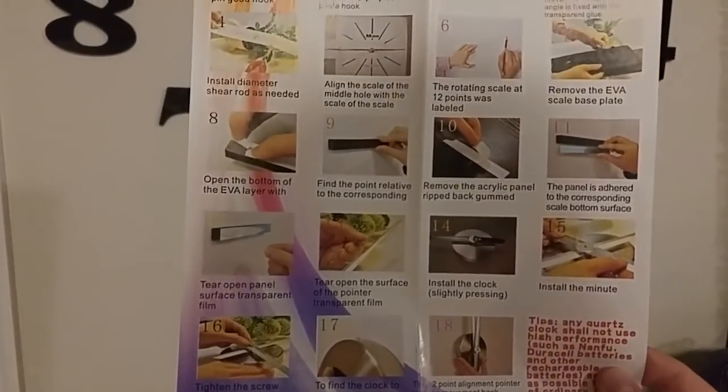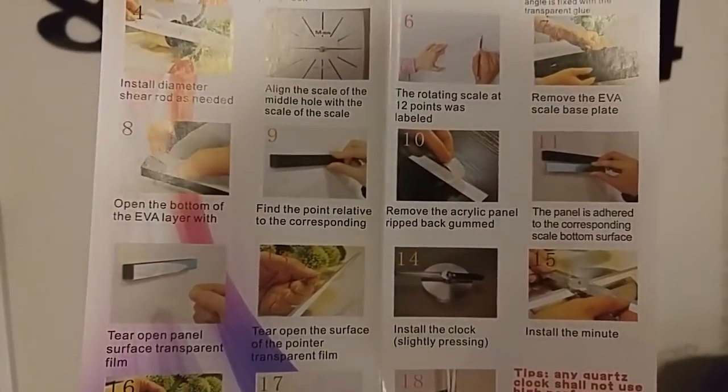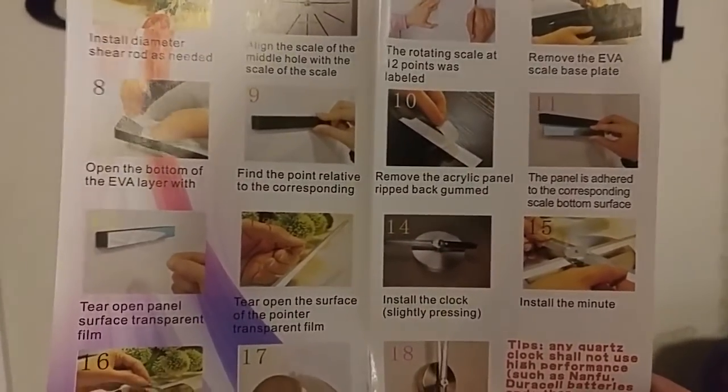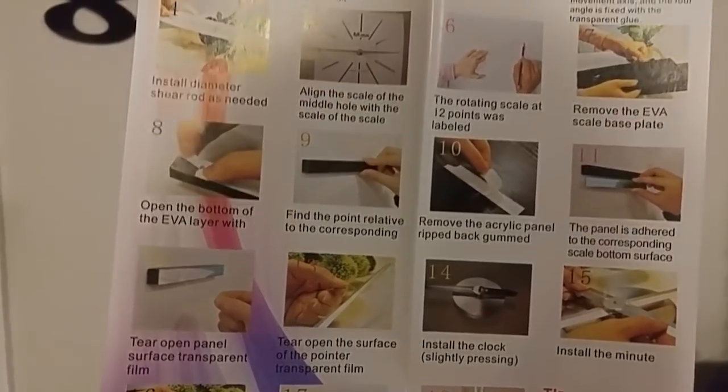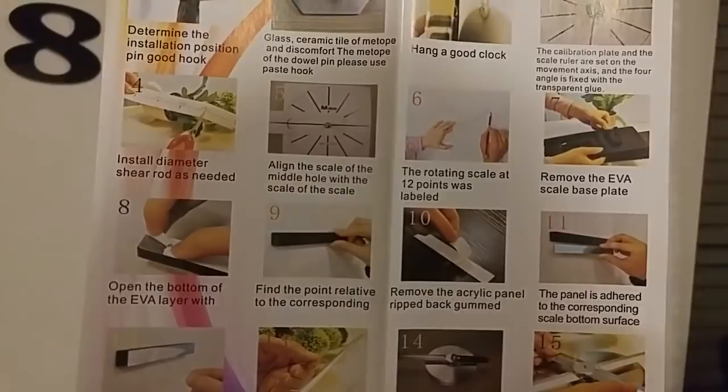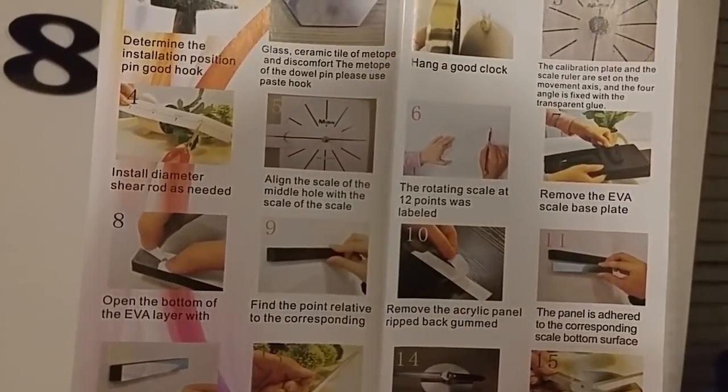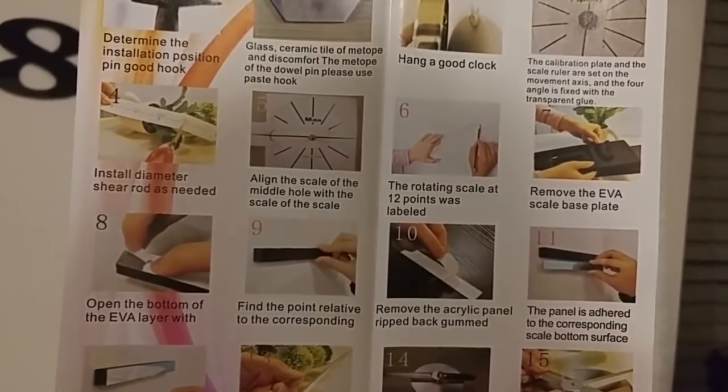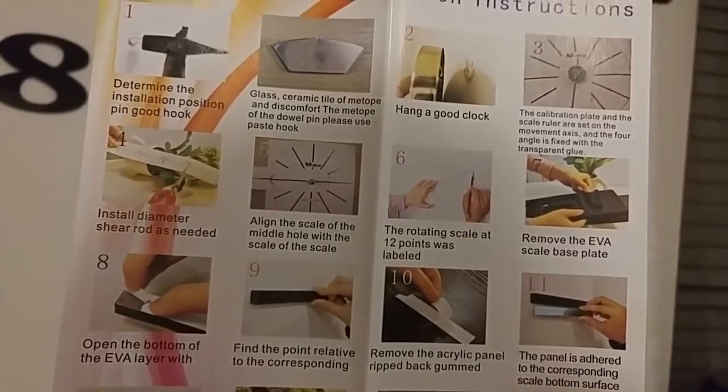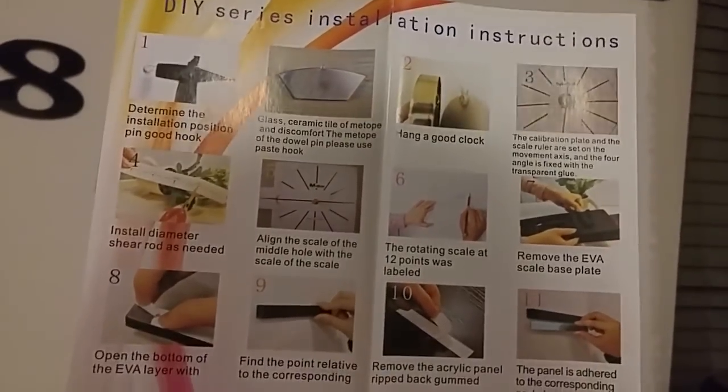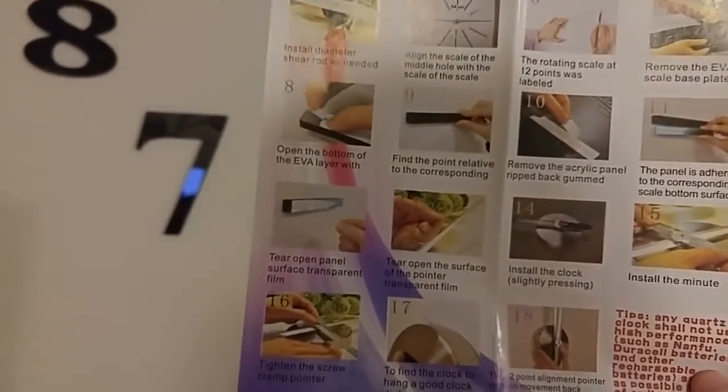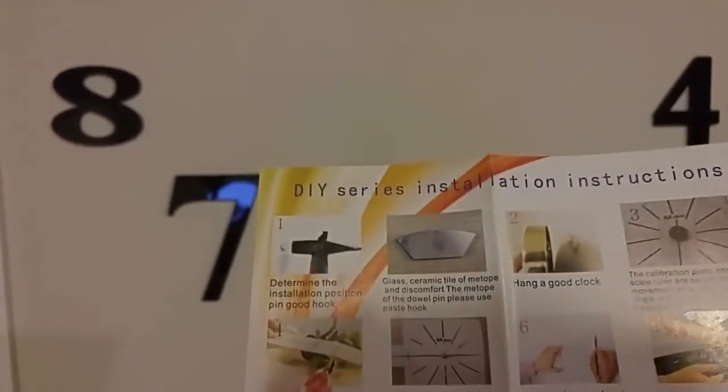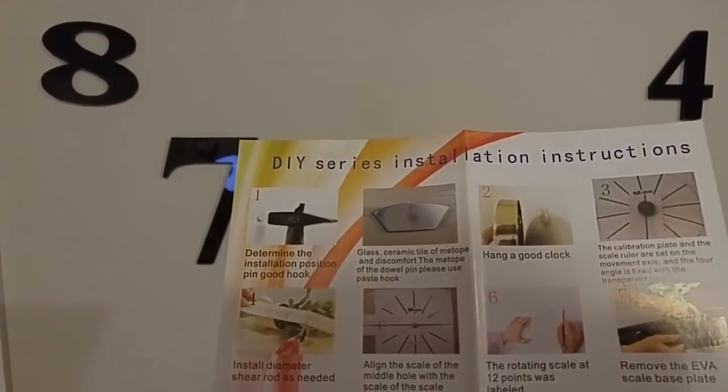The panel is adhered to the corresponding scale bottom surface. Like what does that mean? The calibration plate and the scalar ruler are set on the movement axis and the four angled is fixed with a transparent glue. I don't know how that's step three, what that's supposed to mean and what you're supposed to do with that. So it's pretty much I mean these steps you have to just look at it, lay it out and figure out.